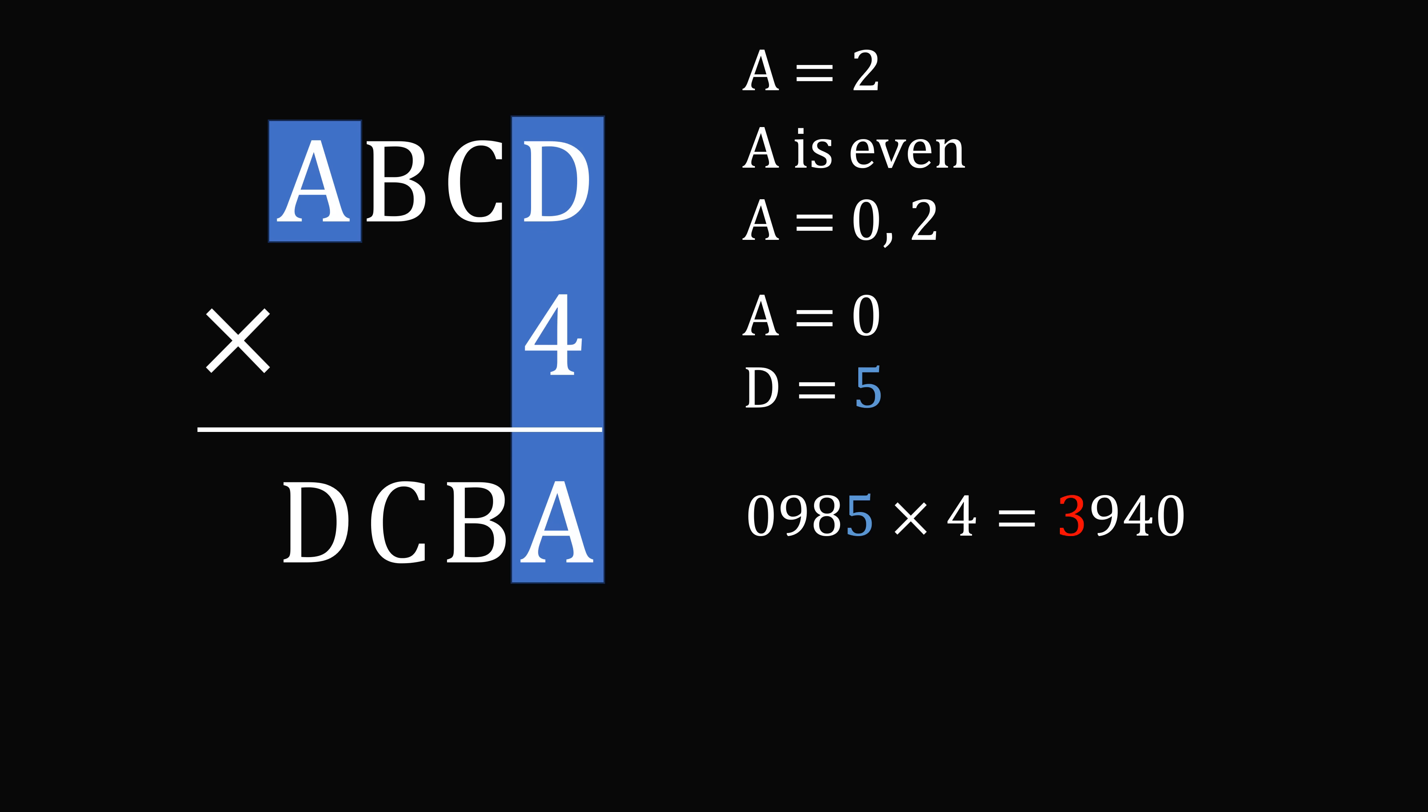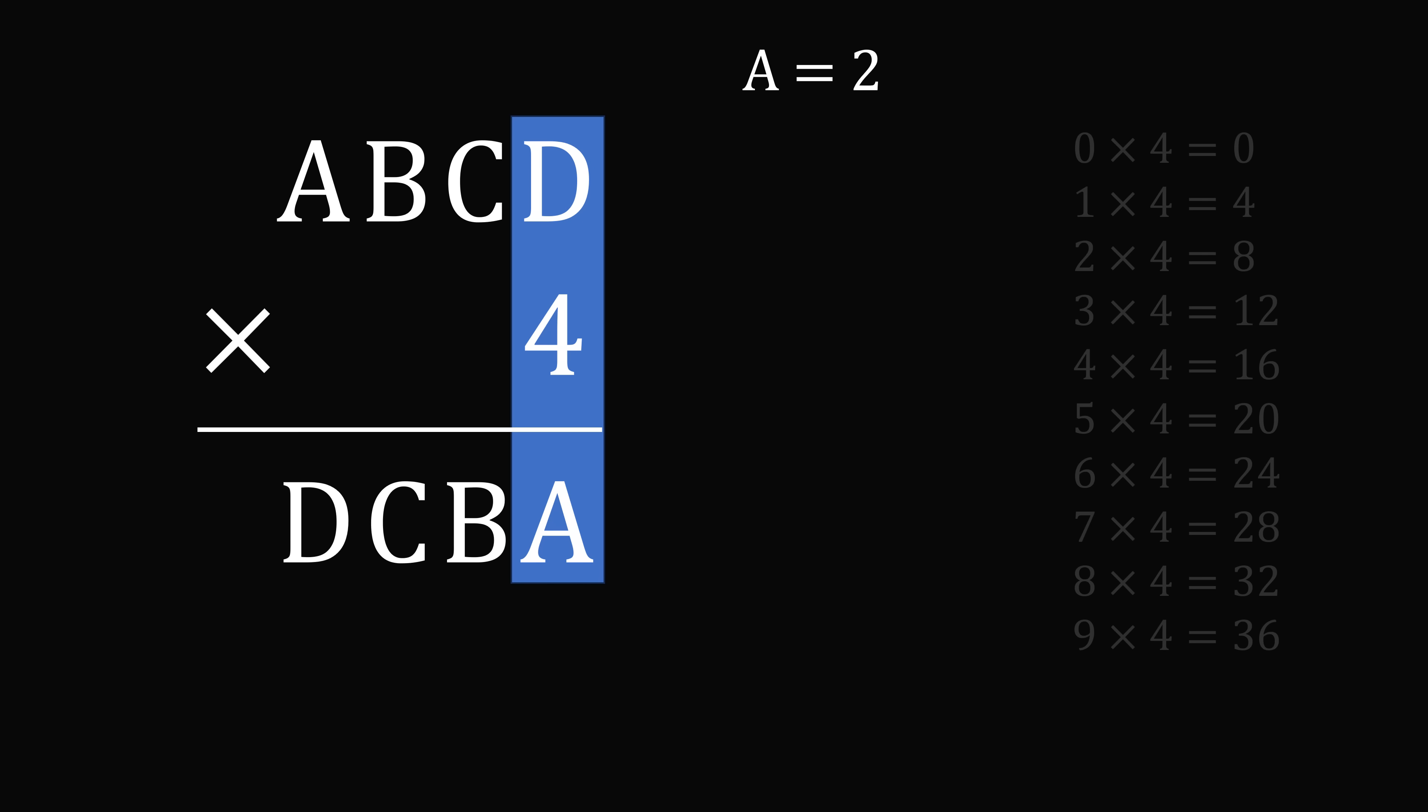And that means A must be equal to 2. Now from here, if A is equal to 2, we'll go ahead and pull up our times table again, and we need the units digit to be equal to 2. So one possibility is 12, and then we would have D is equal to 3. The other possibility is 32, and then we would have D is equal to 8. So D is either 3 or 8. Now, 2,000 times 4 is equal to 8,000. So we know that D cannot be equal to 3. That'll be too small. So we must have D is equal to 8.